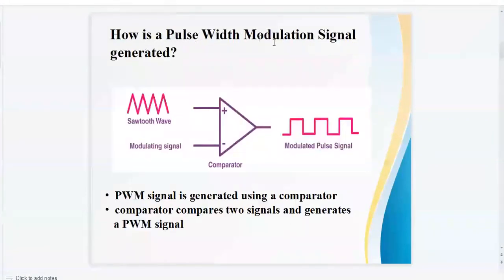How is a Pulse Width Modulation signal generated? A PWM signal is generated using a comparator. As shown in the figure, the comparator will compare two signals. The first signal is a sawtooth wave and the second signal is a modulating signal, and the output of the comparator is a PWM signal.